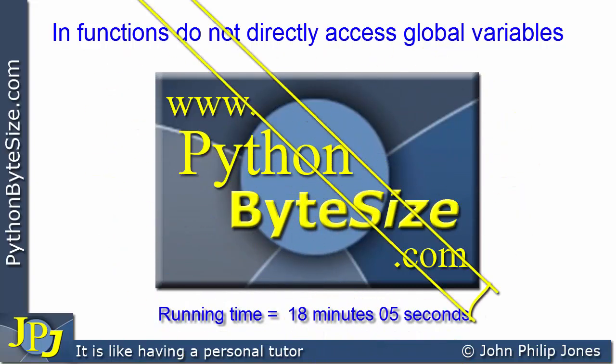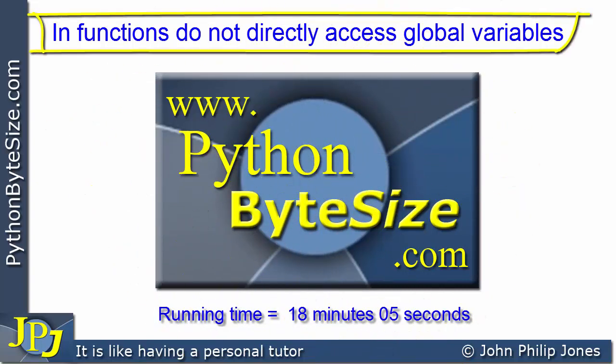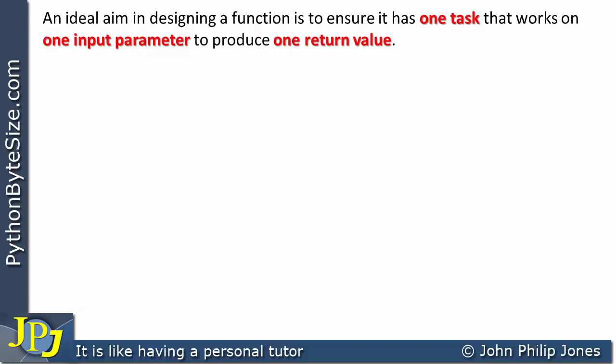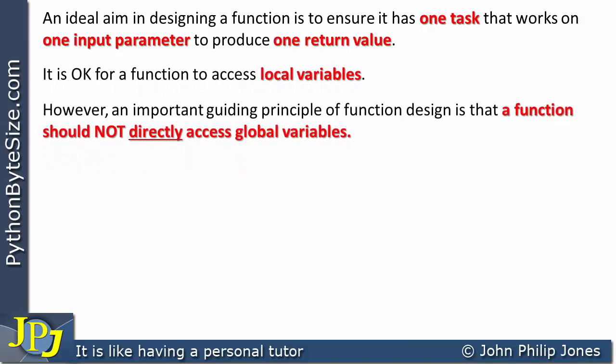It is regarded as poor programming practice to directly access global variables from within a function. This video is going to outline some of the reasons why this is the case. An ideal aim in designing a function is to ensure that it has one task that works on one input parameter to produce one return value. It is okay for a function to access local variables. However, an important guiding principle of function design is that a function should not directly access global variables.